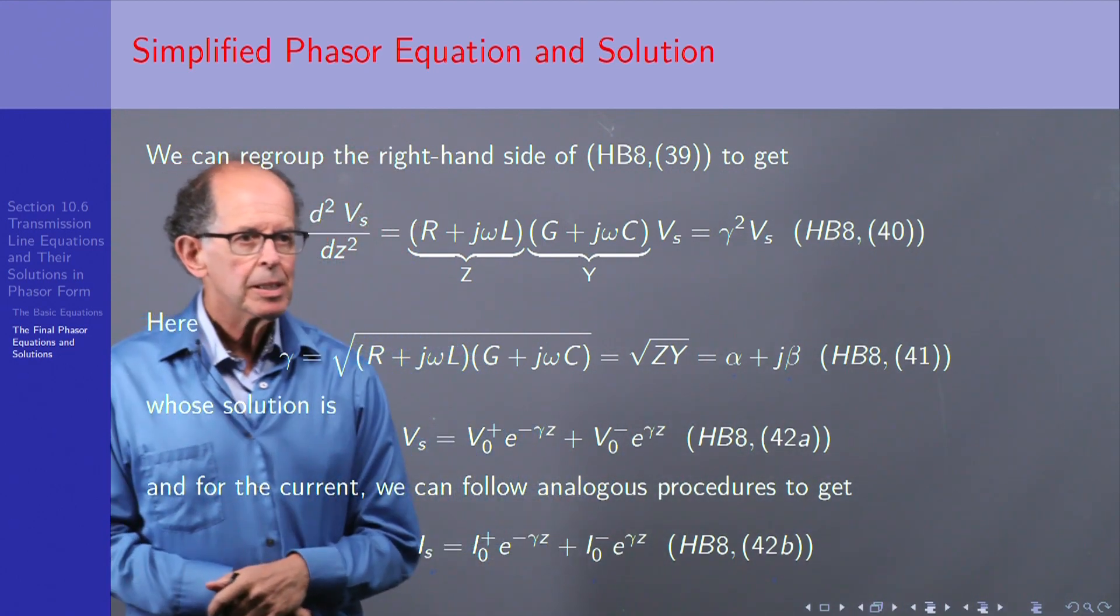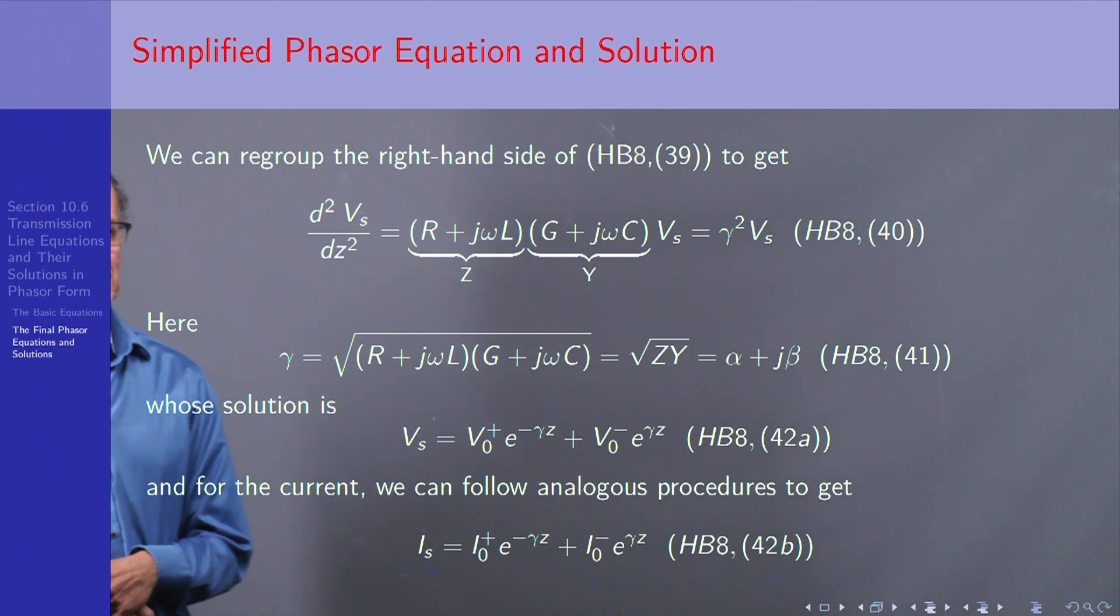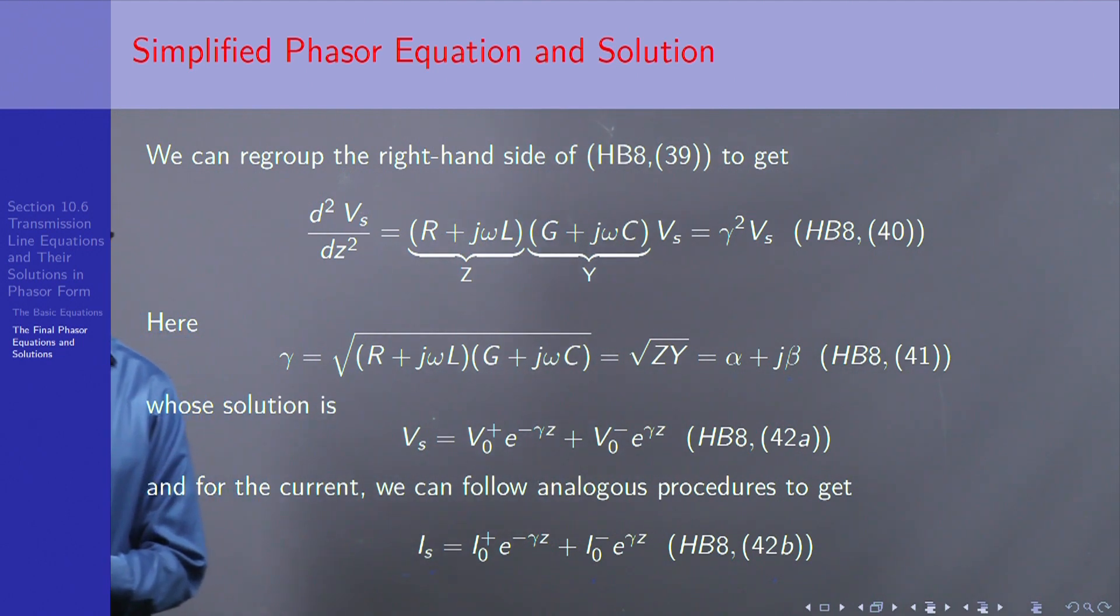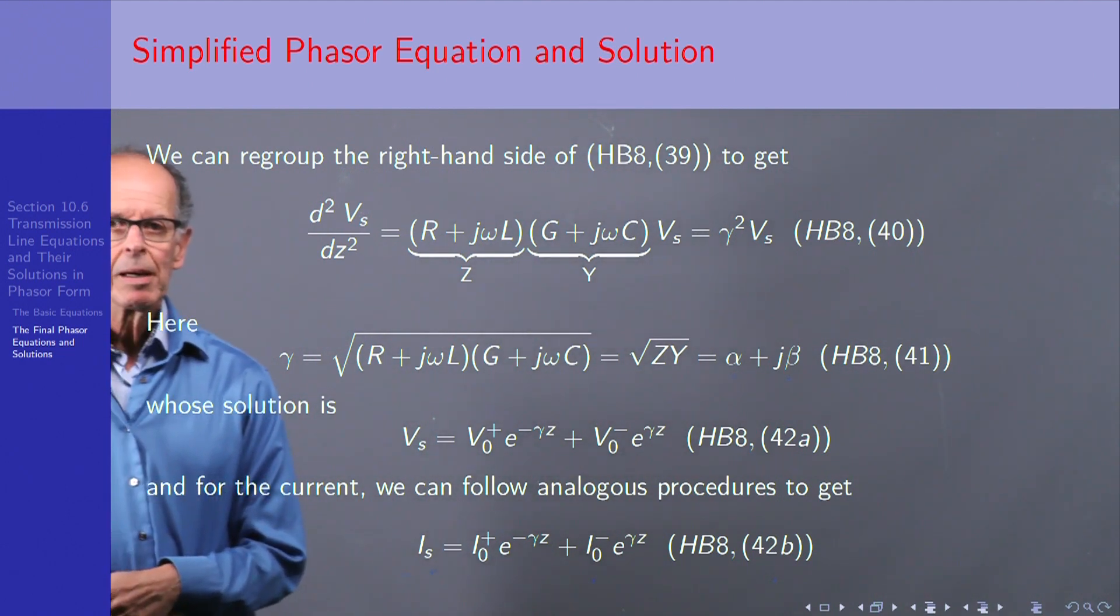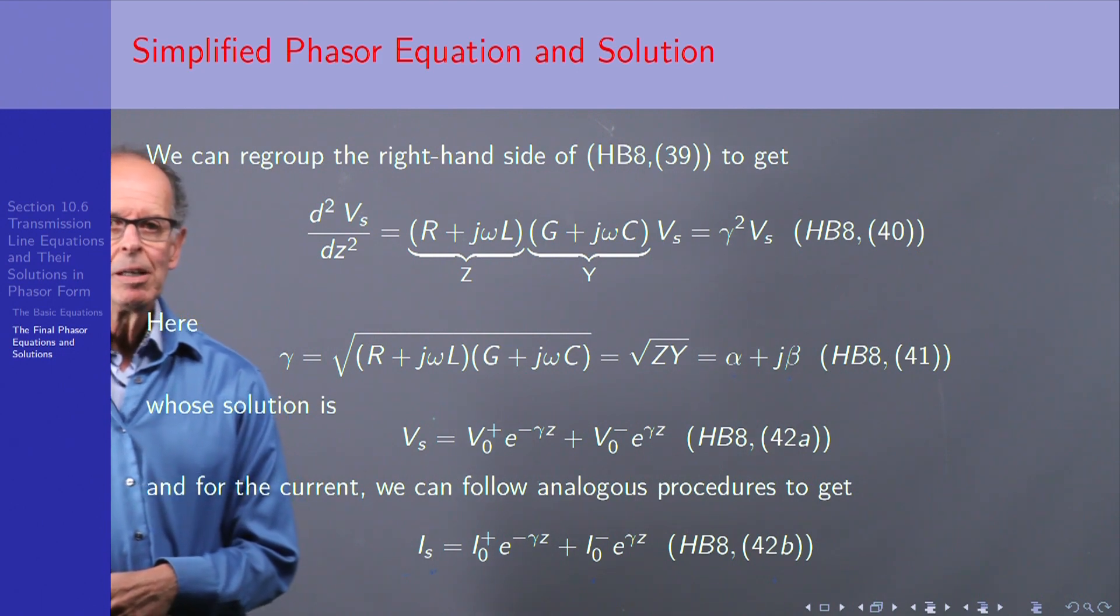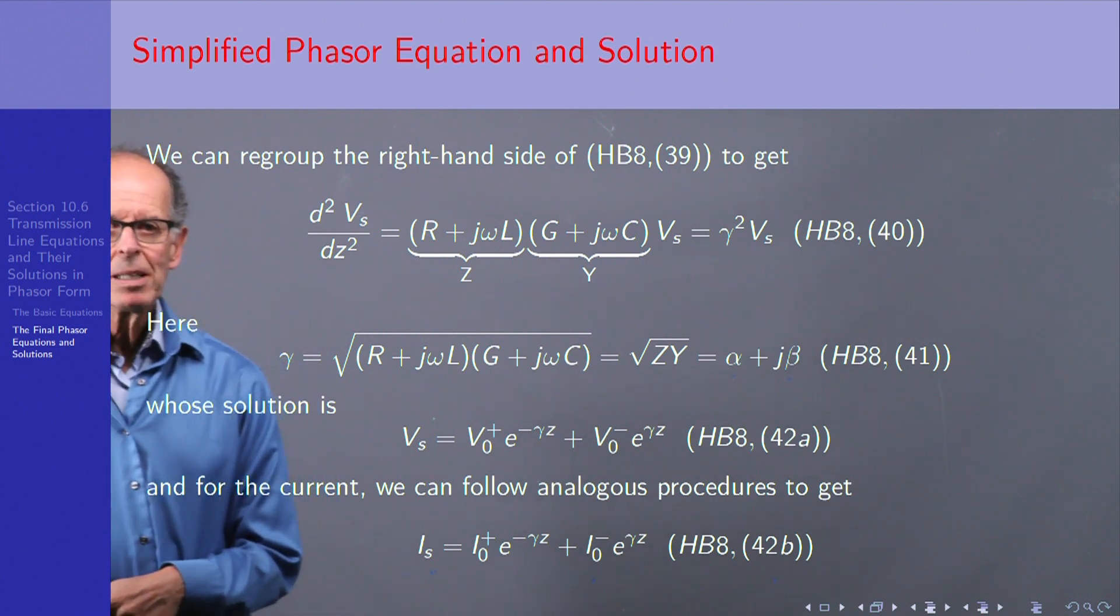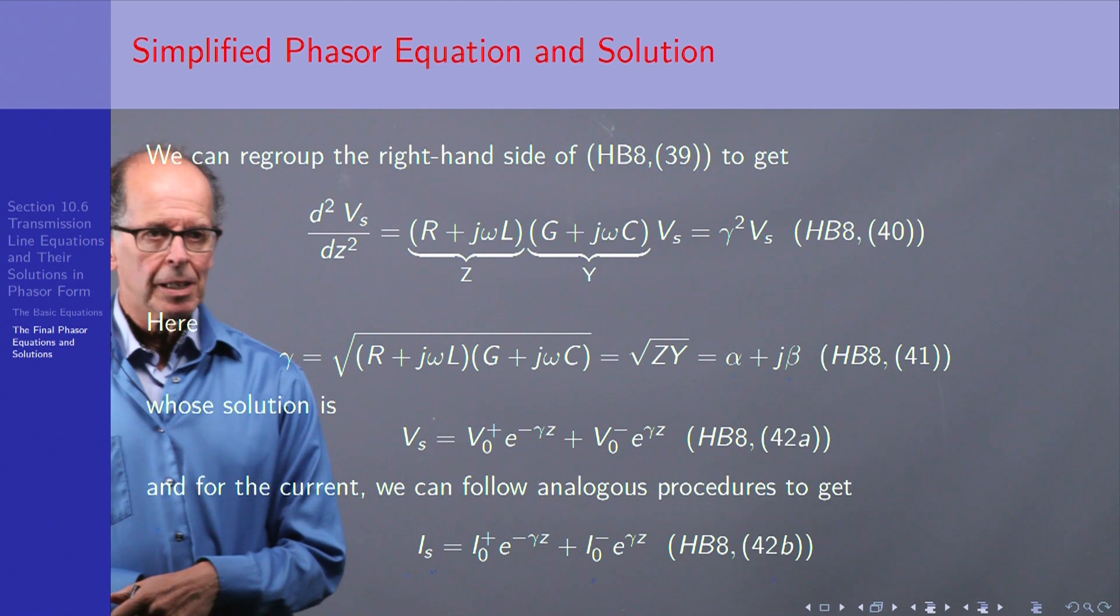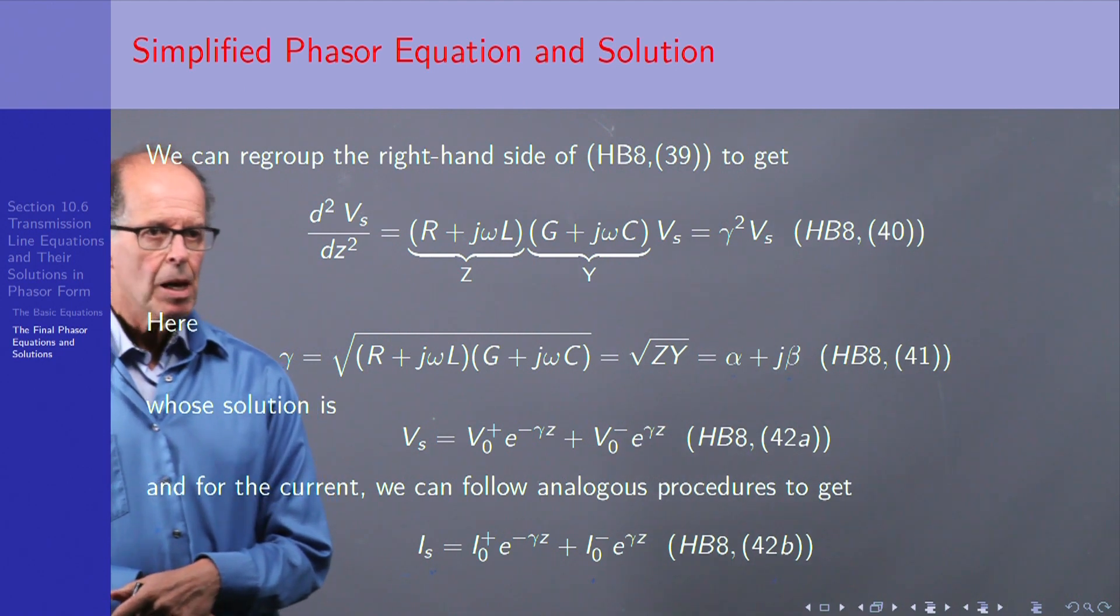Well, we're going to look a little bit at the interpretation of alpha and beta. We've seen beta before, it's actually the wave number. And in the case where there is no resistance R or conductance G, then alpha equals zero and beta is exactly what we called k in our introduction lecture.